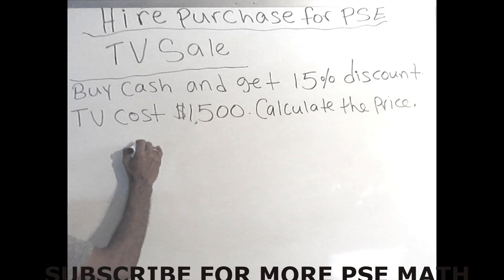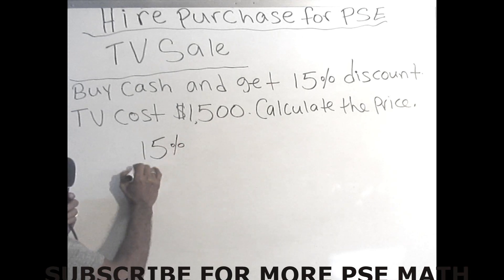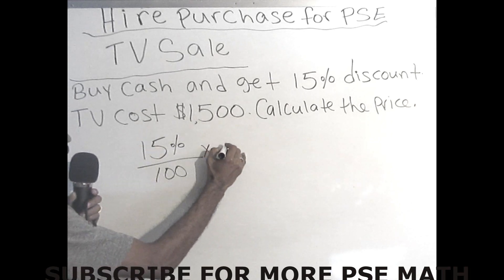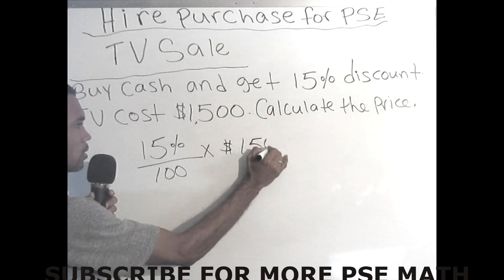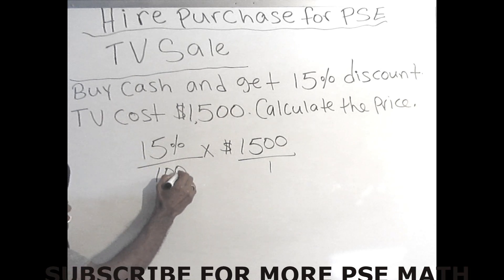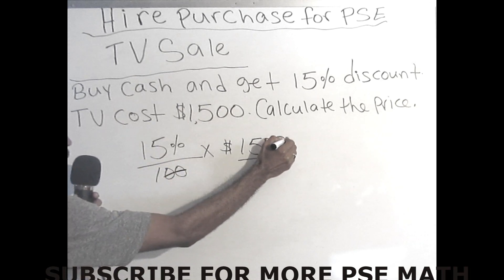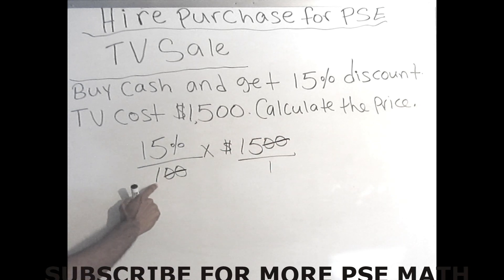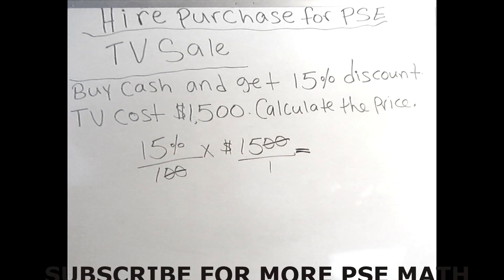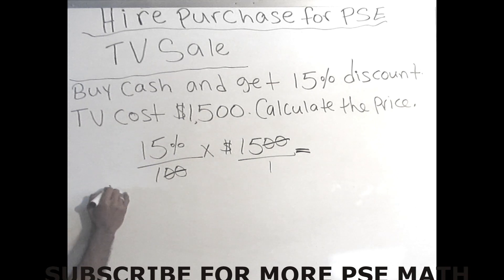The rule is: 15 percent — and remember percent always goes over 100 — times the price of the TV, which is $1500, over one. So step one is finding out what that 15% discount is. We have two zeros at the bottom, so we can cancel two zeros at the top, leaving just 15 times 15. In order to find out how much we're going to pay for the TV, we have to find our discount, and that's what we're doing now.